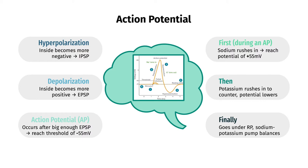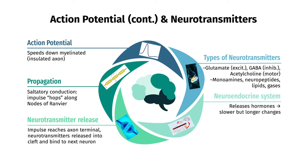Voltage-gated sodium channels will open and allow sodium to rush in, which causes the membrane potential to reach around positive 55 millivolts. Then potassium starts to rush out, sending the membrane potential back down. The resting potential is overshot a bit, so the sodium-potassium pump has to balance it out during what is called the refractory period. The action potential speeds down the axon, which is myelinated, or insulated, undergoing saltatory conduction where it hops from tiny uninsulated areas called nodes of Ranvier.